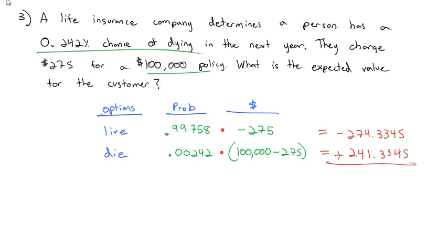And when we add those together, it looks like the customer has lost, on average, $33 per policy. The customer, because it's negative, loses, on average, $33 per policy.